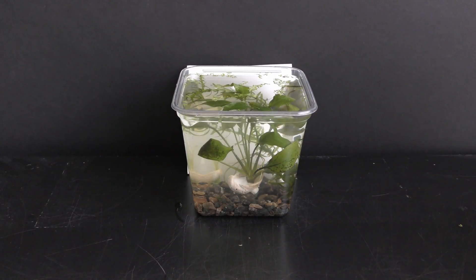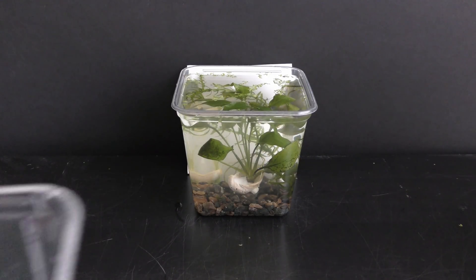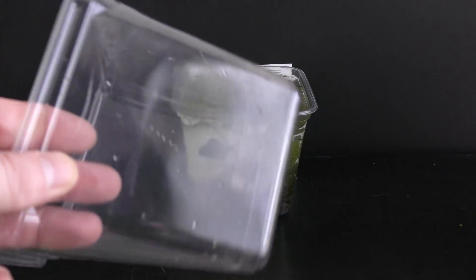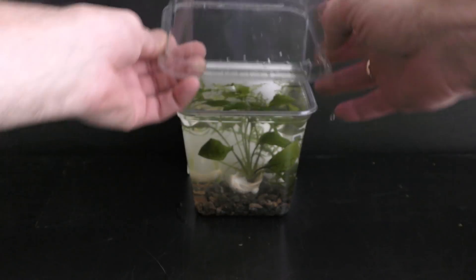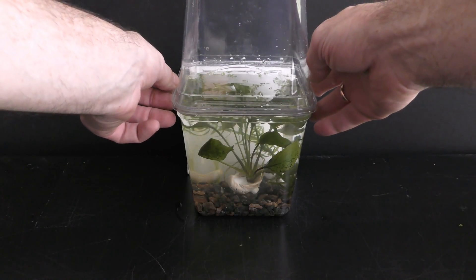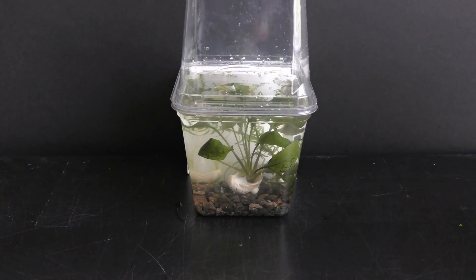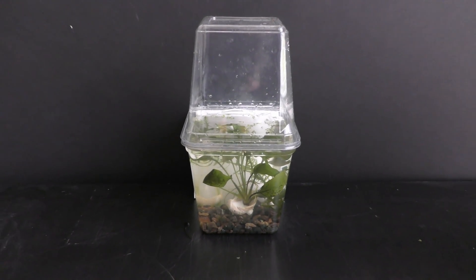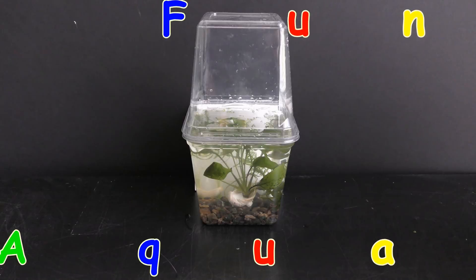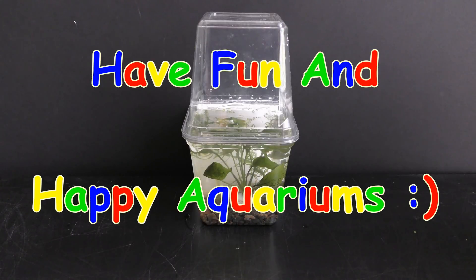Here is another example where I use the same size nursery to grow an underwater peace lily plant for couple years now and a temporary house for young guppies. In regards of usability, disposable aquarium nurseries like this one are one of the greatest tools for you, curious aquarium lovers. Have fun and happy aquariums!